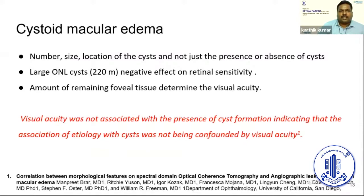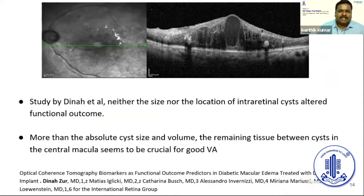Visual acuity in cystoid macular edema is not determined simply by the presence or absence of cysts, but rather by the number, location, and size of the cysts. Larger cysts have a negative effect on retinal sensitivity. It is the amount of remaining foveal tissue that ultimately determines visual acuity, and many studies confirm that the remaining retinal tissue, rather than cyst size and location alone, is what determines the visual outcome.